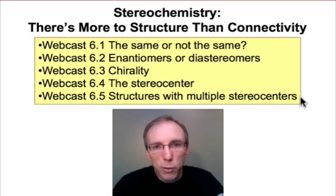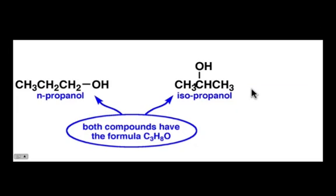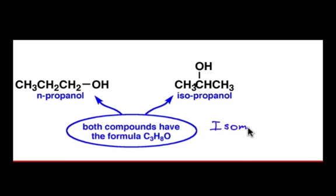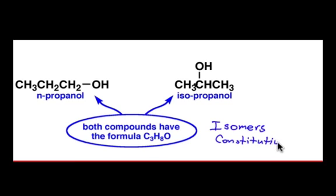Finally, we'll take a look at molecules that have multiple stereocenters and some of the unique properties when a molecule has more than one stereocenter. Here's a brief reminder of the idea of isomers. Isomers are any two compounds that have the same formula. These molecules both have the same formula C3H8O, and therefore these are a pair of isomers. They differ by bonding connectivity — the hydroxyl group is connected to the center carbon in isopropanol and the terminal carbon in the n-propanol molecule. Molecules that are isomers that differ by bonding connectivity are known as constitutional isomers.